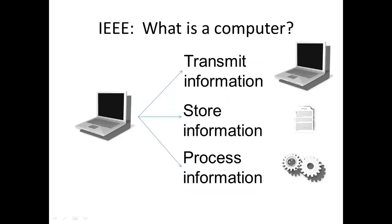As discussed in an earlier video clip, according to the Institute of Electrical and Electronics Engineers, IEEE, a computer is a digital — usually electronic — device that can perform three separate types of tasks: it can transmit information, it can store information, and it can process information. Desjardins's HCHI interaction model, introduced in the following slides, is derived to a large degree from the IEEE minimal computer model.